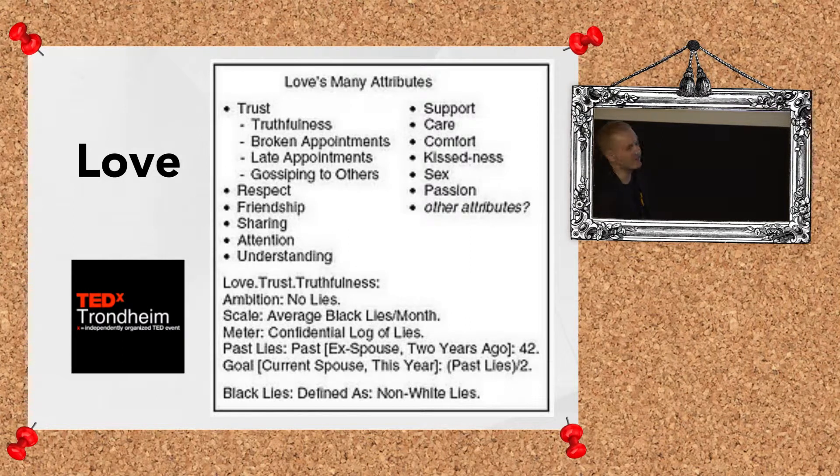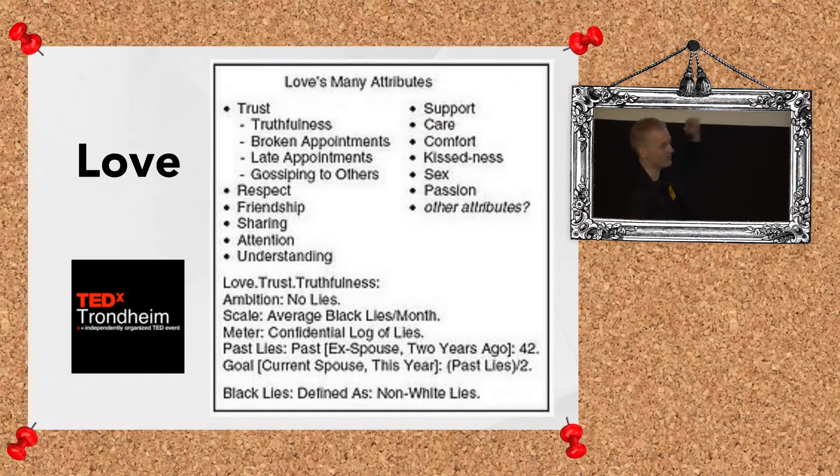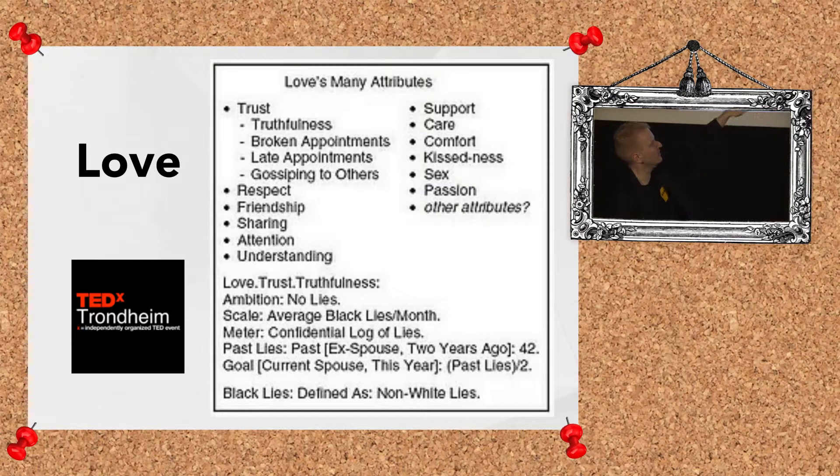So when you are in love, what does this mean to you? This is trust, respect, friendship, sharing, and so on. And the lower example is what do you mean by trust? Love, subcomponent trust, within trust it is truthfulness. Most of you would agree probably that truthfulness is required for love. And you would say that ambition, no lies. Scale, average black lies per month. Past, 32 black lies per year. So this is maybe not so good. And ex-spouse, so this relationship failed. We have a new relationship. Our goal is to have a higher level of love. So maybe let's cut the lies by lying by half. Maybe this will be enough. So this is the point.